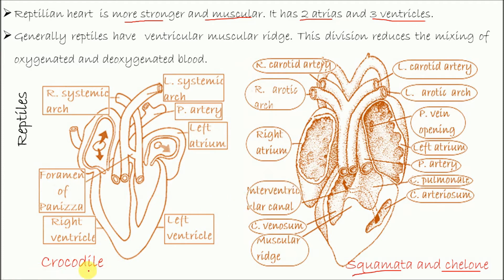In case of crocodiles, the crocodile has a complete four-chambered heart. This one is the right atrium and this one is the left atrium. This one is left ventricle and this is right ventricle. The ventricle is separated by interventricular septum. Right ventricle receives blood from right atrium through right atrioventricular aperture, and left ventricle receives blood from the left atrium. From the left ventricle arises the right systemic arch, whereas the left systemic arch arises from the right ventricle. The pulmonary artery also arises from the right ventricle.